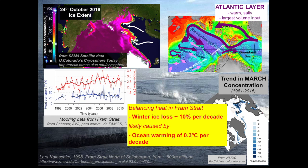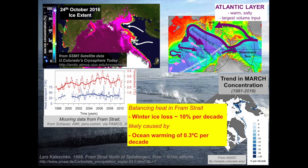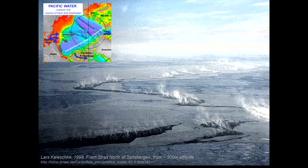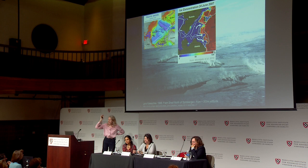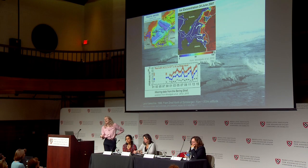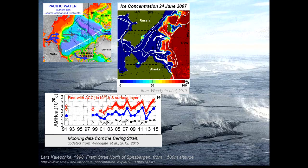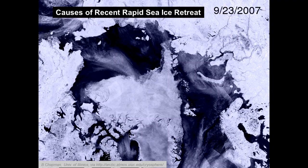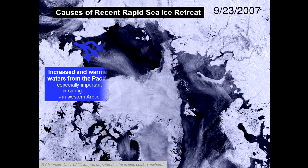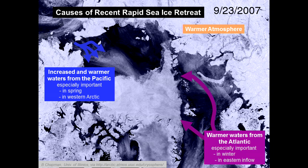On the Pacific side, the same pattern is visible — tongues of warm water driven by topography melt back tongues in the ice. The causes of recent sea ice retreat include increased heat from the Pacific, increased heat from the Atlantic, warmer atmospheres, added on to a preconditioning where we've flushed the older ice out of the Arctic. All these things are conspiring to give the Arctic a really bad day. We have so far not managed to predict any of the extreme ice melt years that we've had.